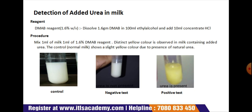If urea is present, a distinct yellow color is observed in the milk containing the added urea. Normal milk shows a slight yellow color due to the presence of natural urea. The diagram shows the negative test and a yellow color appearance in the milk test represents the positive test for urea detection in milk, and hence the milk is adulterated.